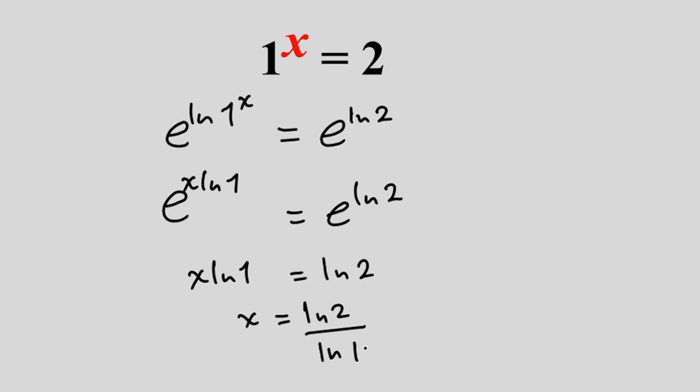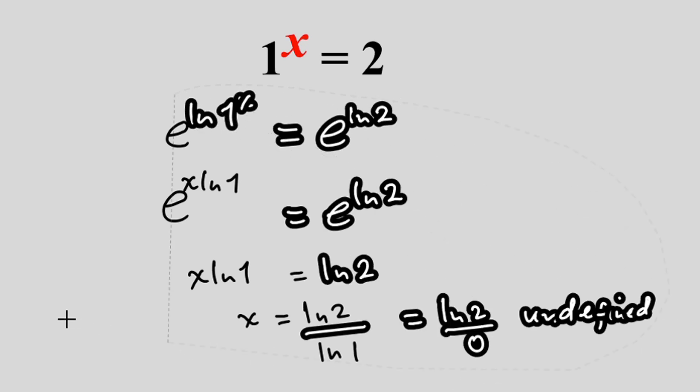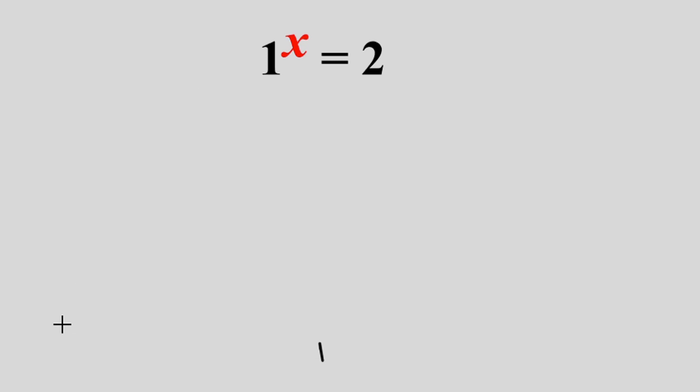Hmm, we have a problem here. ln of 1 is equal to 0. Therefore, we have ln of 2 divided by 0, which is undefined. So therefore, it is clear that this equation has no real solution. So let me get rid of this. So how can we solve the complete solution to the problem?